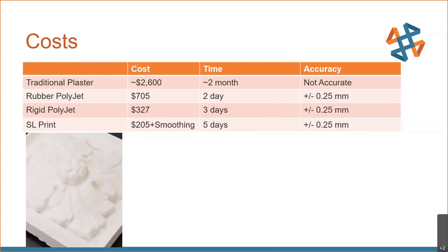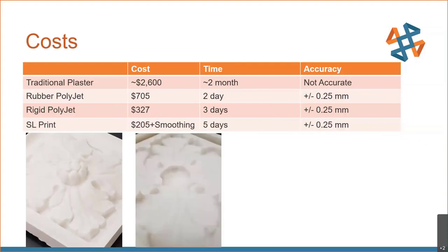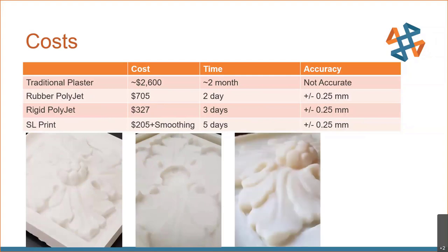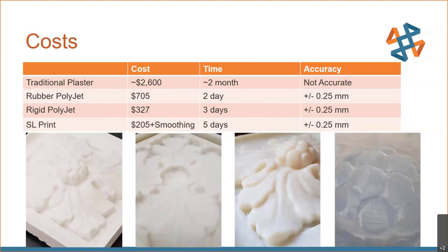Looking at the other options: printing the rubber PolyJet mold would use about $700 of material when hollowed out, and then you're ready to cast plaster. The rigid PolyJet part was about $300 of material, taking about three days total — printing, cleaning support material, casting the silicone mold, then ready to cast plaster. The stereolithography part was roughly $200 of material, but also requires smoothing the part carefully without over-aggressively de-featuring or losing accuracy before doing the silicone cast. All methods achieve 0.25mm or 0.01-inch accuracy.